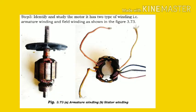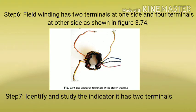Step 5: Identify and study the motor. It has two types of winding: armature winding and field winding. Step 6: Field winding has two terminals at one side and four terminals at the other side.